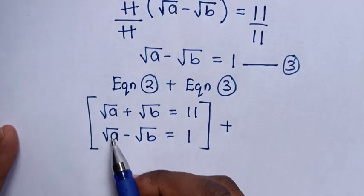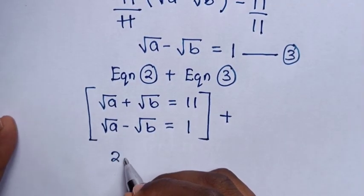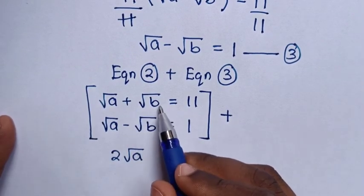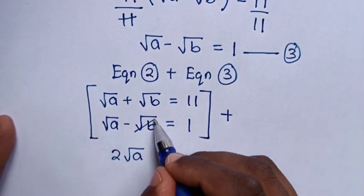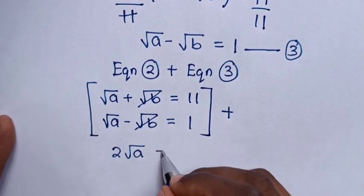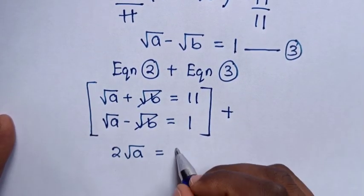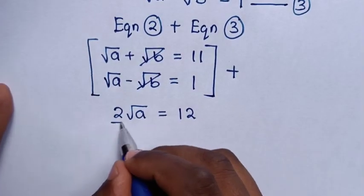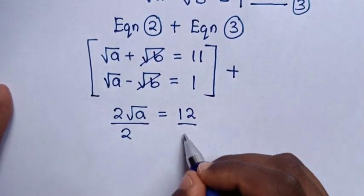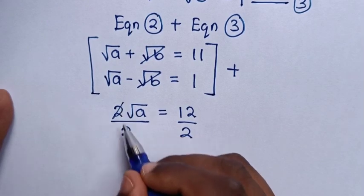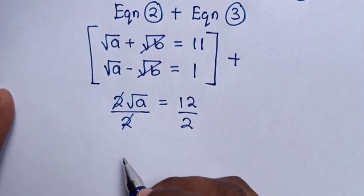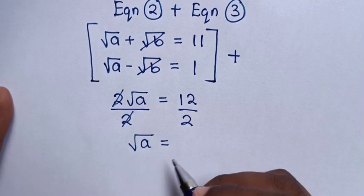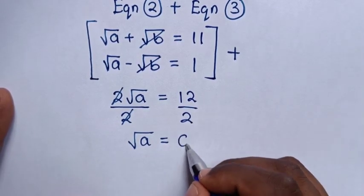Adding the two equations: square root of a plus square root of a gives 2 square root of a, and square root of b minus square root of b cancels to 0. So 2 square root of a equals 11 plus 1, which is 12. Dividing both sides by 2, square root of a equals 6.